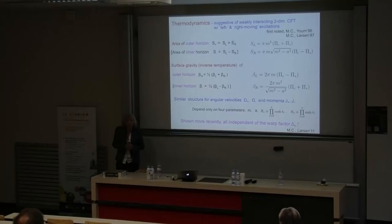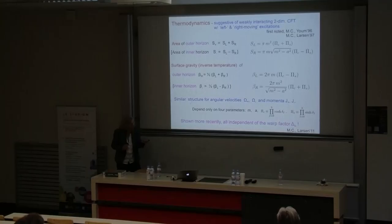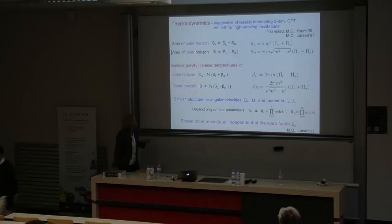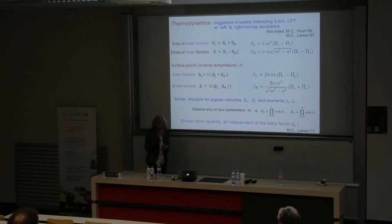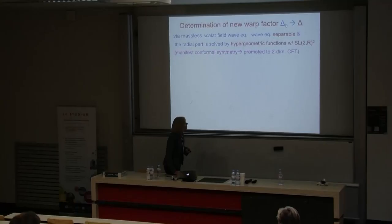This surprising independence of thermodynamics from the warp factor led to the justification that we can modify the geometry by just changing the warp factor while keeping all thermodynamic properties of inner and outer horizons completely intact. That modification is what we dub the black hole box. For a particular choice of the new warp factor — which still keeps all thermal properties intact — we expect conformal symmetry to emerge. It is only for a specific value of this warp factor that we hope to get the conformal symmetry related to the 2D CFT made manifest.